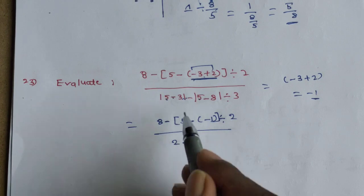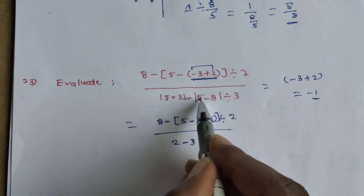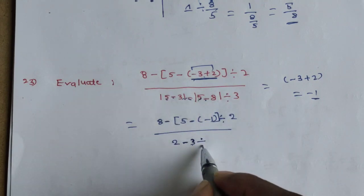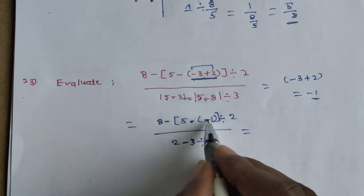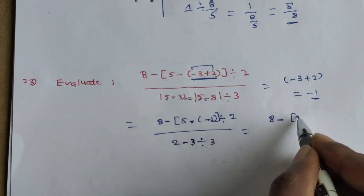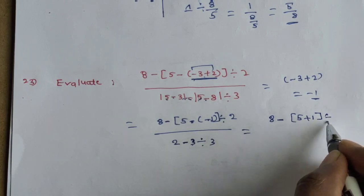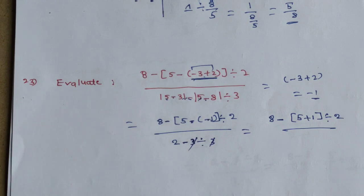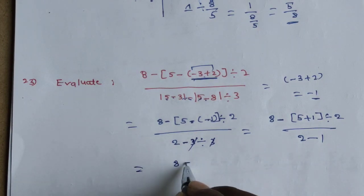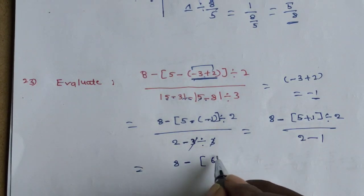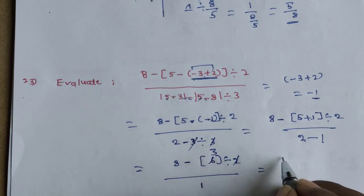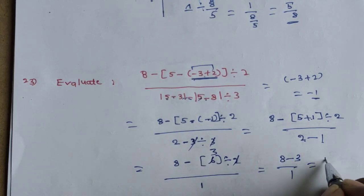Continuing: 5 minus 3 equals 2. Then 2 minus 12 minus 5 plus 16 divided by 2 gives 2 minus 12 minus 3 by 15 by 1. The final answer is obtained after simplification.